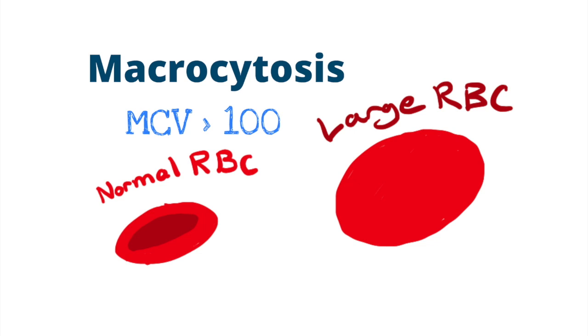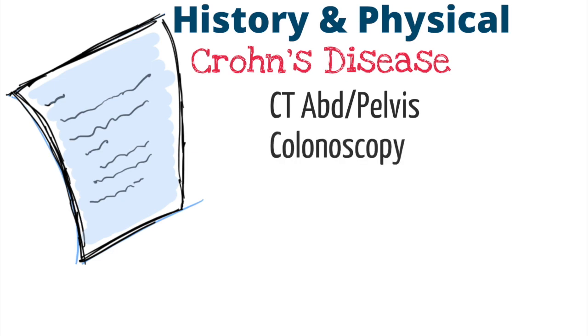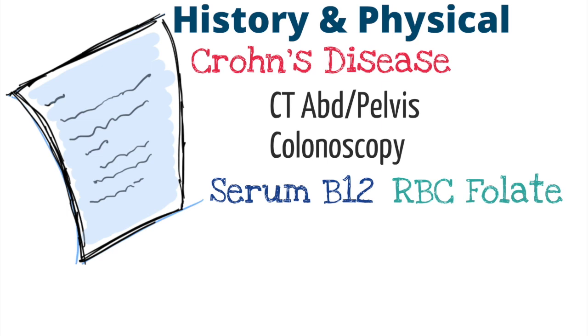Whenever you see a macrocytosis, consider vitamin B12 and folate deficiencies. But remember, these are not the only causes of enlarged red blood cells. If you suspect B12 and folate deficiencies, the first step is to take a very good history and physical to identify any of the features we discussed. If you suspect a specific diagnosis, order the appropriate testing to investigate the cause. For example, if you suspect someone has Crohn's disease, consider a CT abdomen and pelvis and a colonoscopy for further evaluation. To test for B12 deficiency, order a serum B12. And for folate deficiency, you can order an RBC folate.